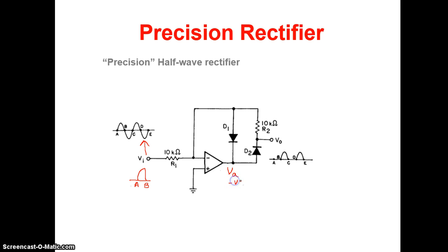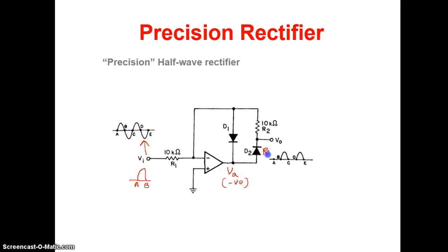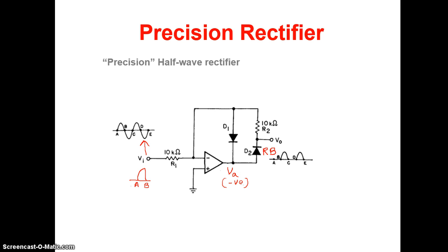During the positive half cycle, VA is negative. Diode D2 has its positive terminal connected to this side, so when a negative voltage appears at VA, diode D2 is reverse biased and therefore off. With D2 reverse biased, there is no output, so from point A to B, the output is equal to 0.